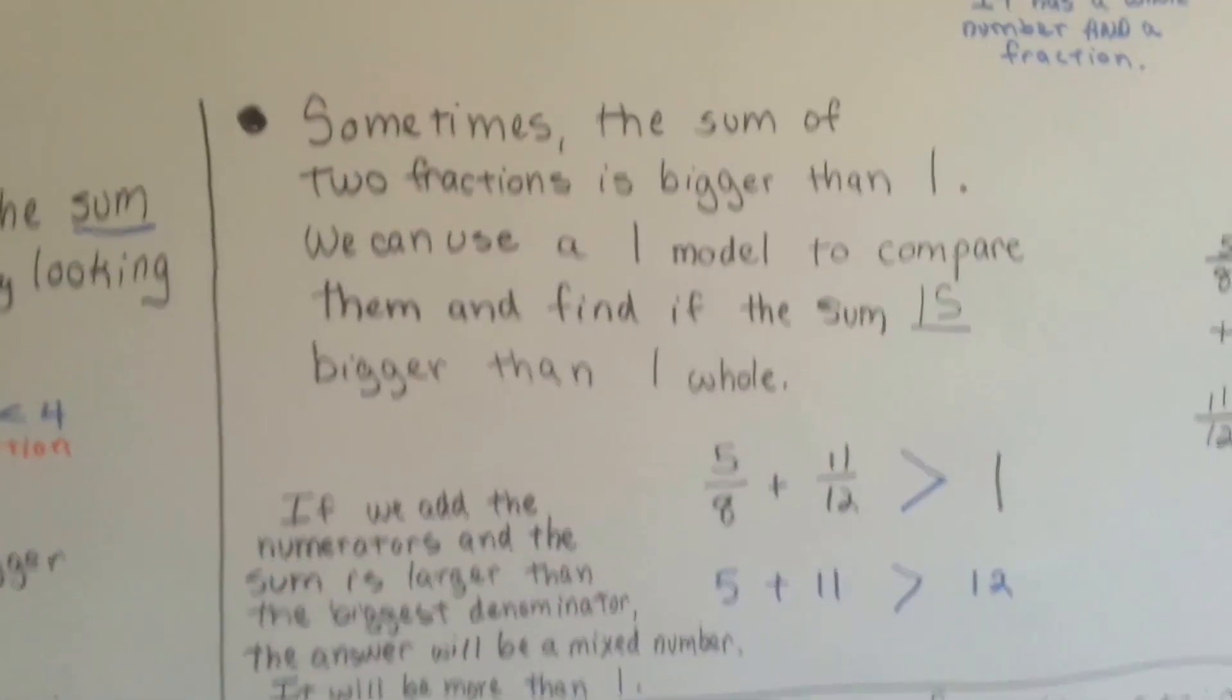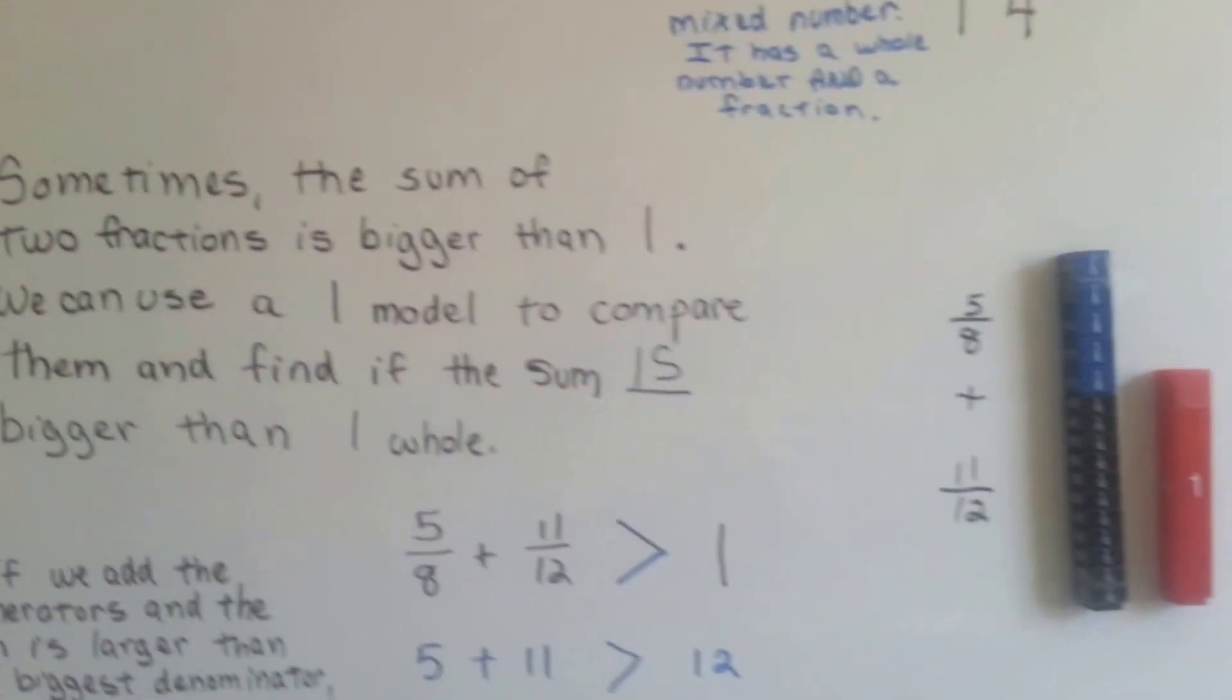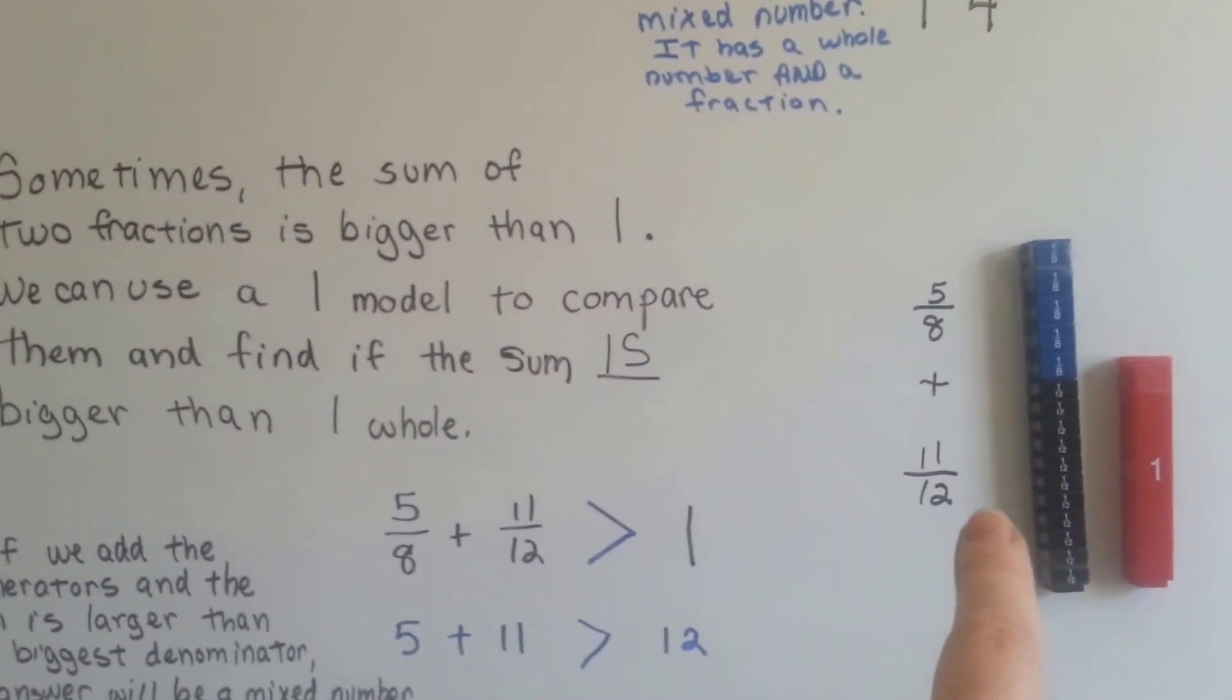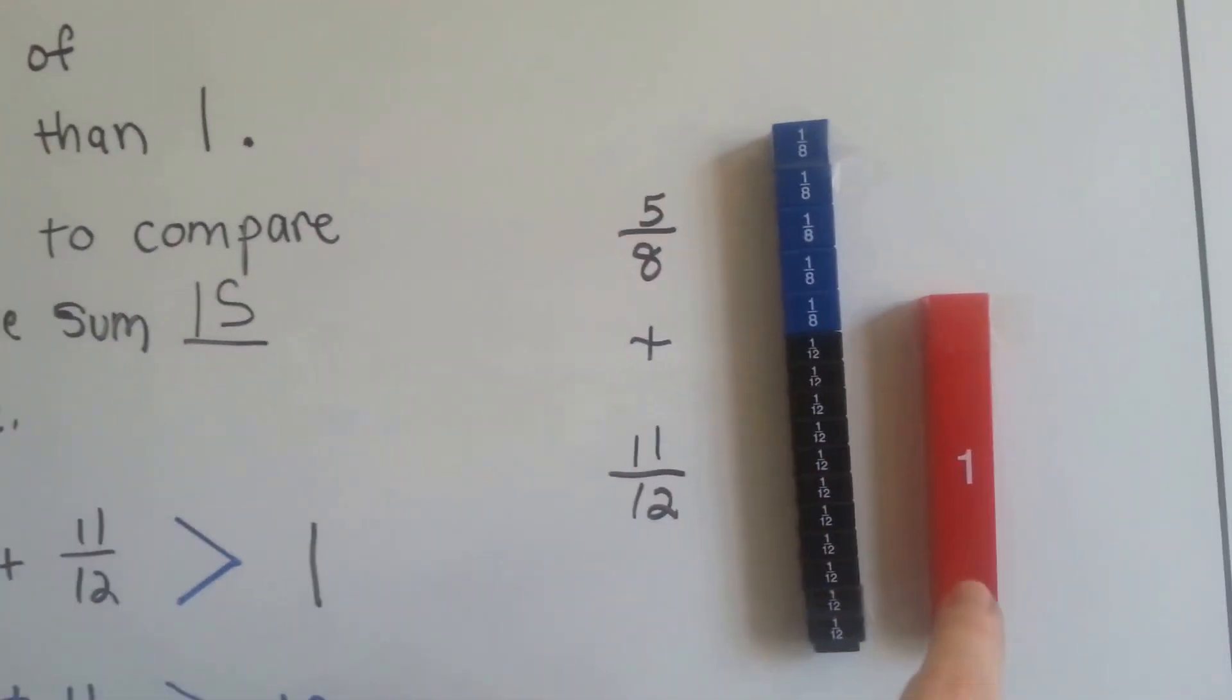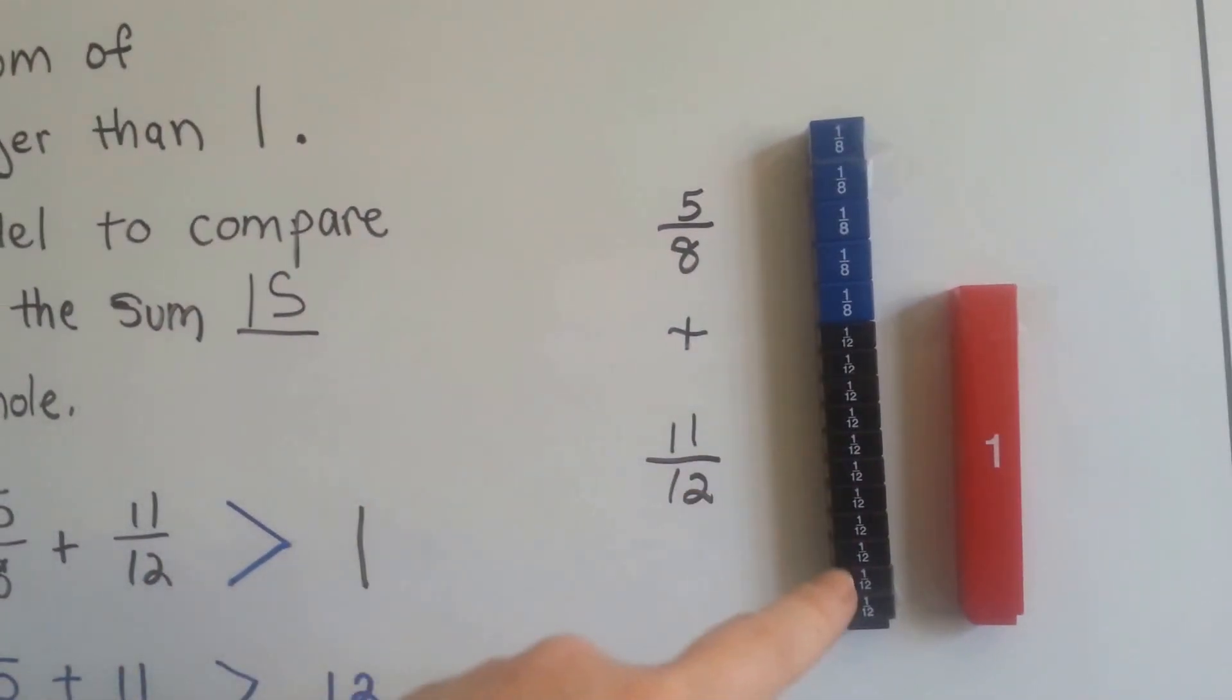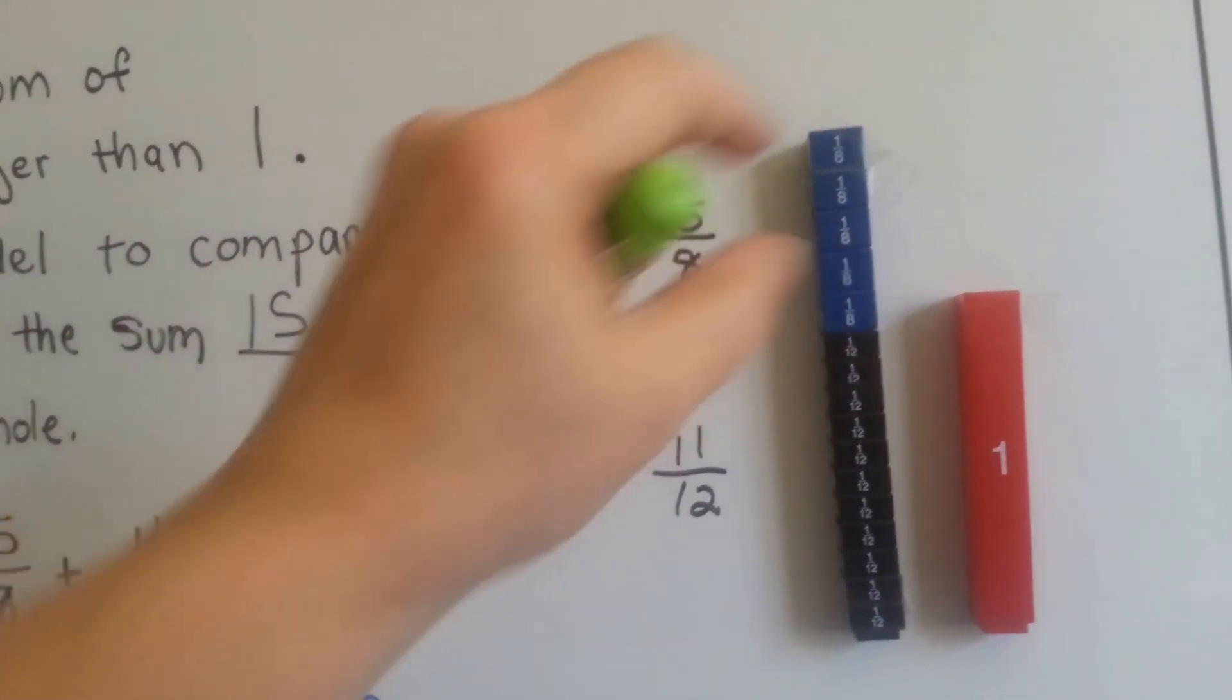So sometimes the sum of two fractions is bigger than 1. We can use a 1 model to compare them and find if the sum is bigger than the whole. So here's 1 whole, and we're adding 11 twelfths and 5 eighths. Well, we could see that's going to be bigger than the 1, isn't it?